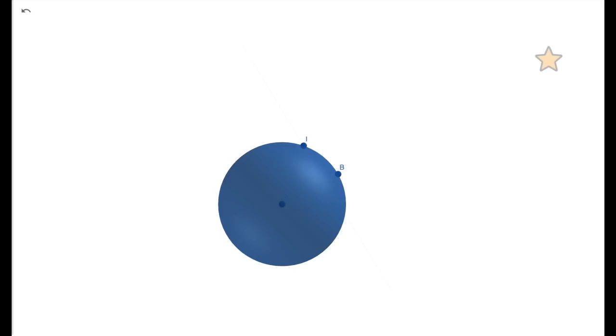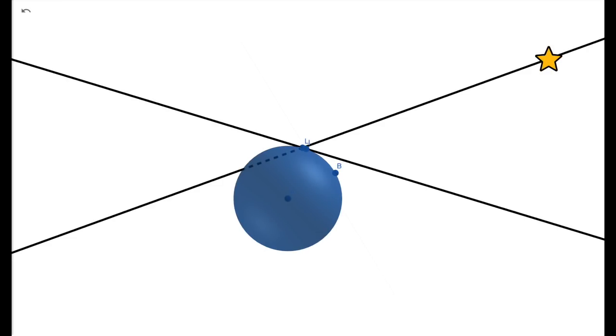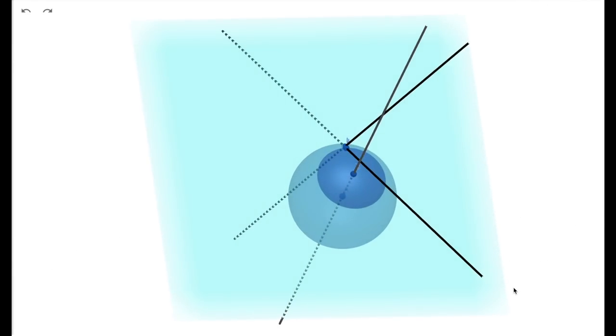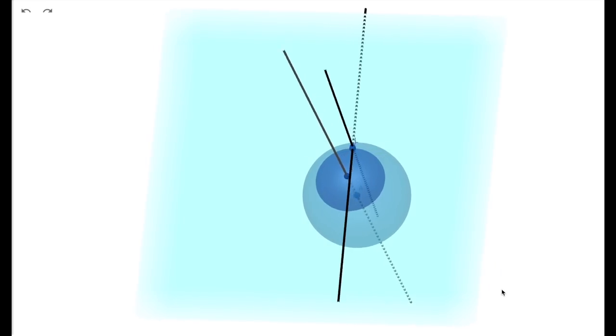One of the most common methods is called an intercept method. At a certain time of the day, you measure the angle that some star makes with the horizon. This allows you to calculate the height of the star above Earth. But there are many positions from where the star makes this angle with the horizon. Namely, all of these positions will form a circle on the sphere of our planet.